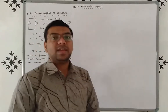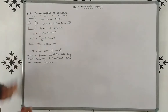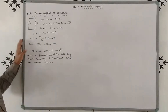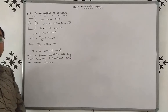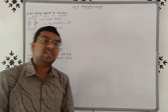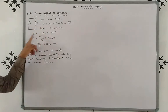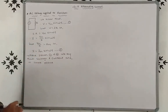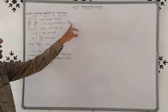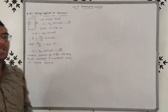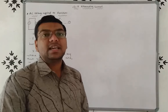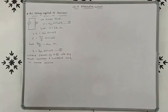When we apply AC voltage to a resistor, AC source is connected to resistor R. V = Vm sin ωt, and V = IR, so IR = Vm sin ωt, giving I = Im sin ωt where Im = Vm/R. From equations 1 and 2, since both have sin ωt, voltage and current are in the same phase.